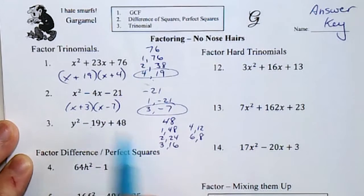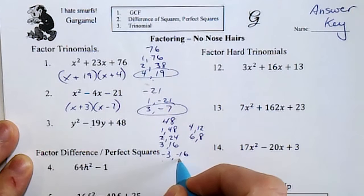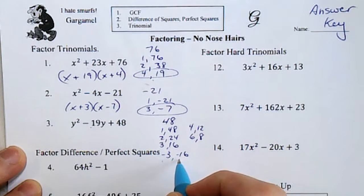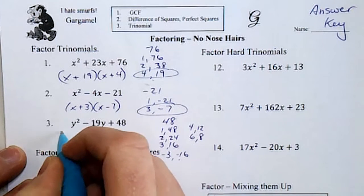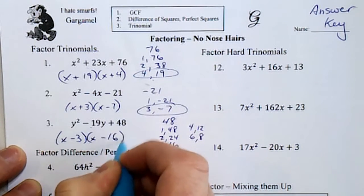Negative 19, I have 19, so I just switch the signs of both. I can switch both, I can't switch just one. So negative 3, negative 16 multiply to a positive number and add to negative 19.